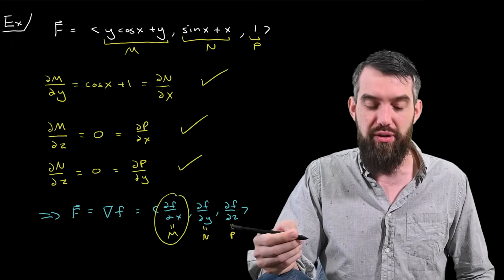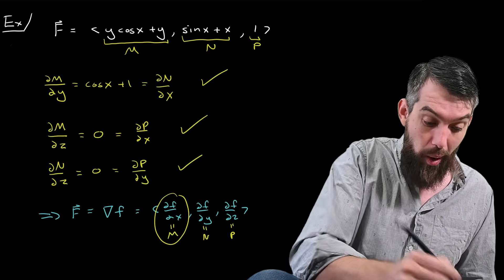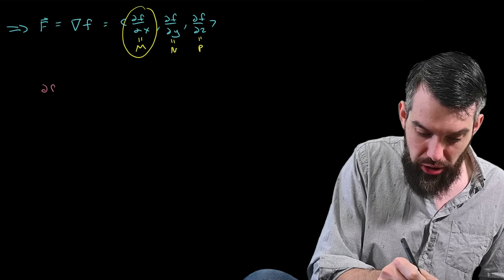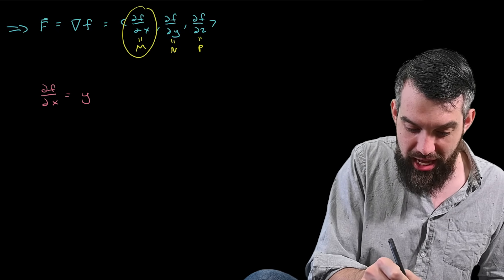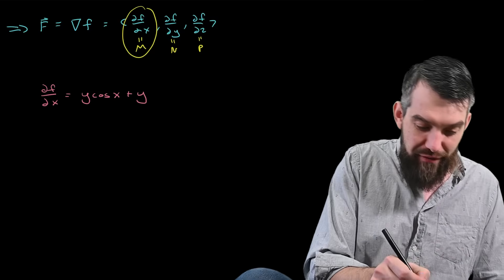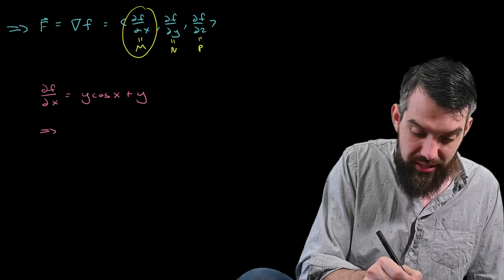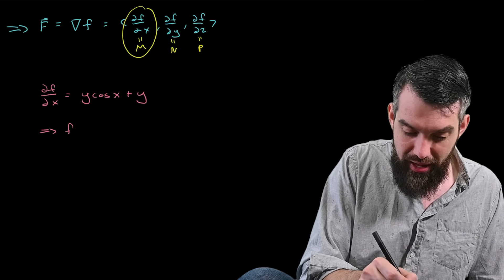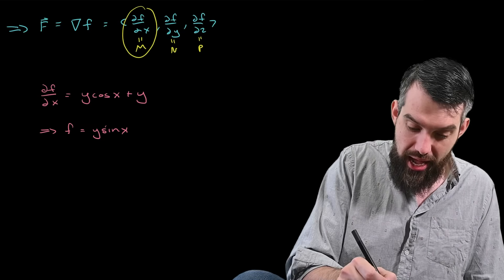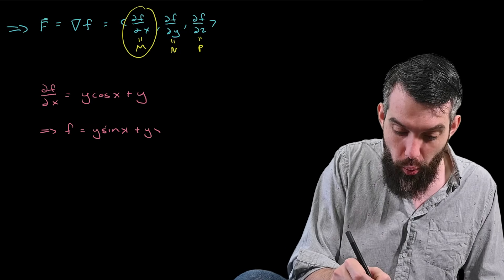Let's focus on the first equation: the partial derivative of f with respect to x equals m, which is y cos x plus y. So the partial of f with respect to x equals y cos x plus y. If I integrate both sides with respect to x, I get f equals y times sin x — because the integral of cos x is sin x — plus y times x. So f equals y sin x plus yx.